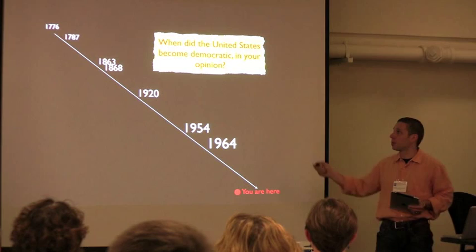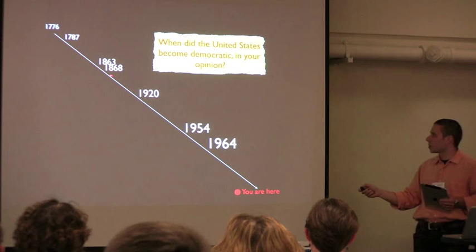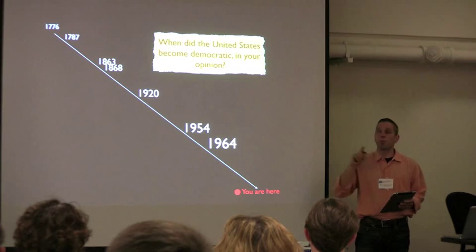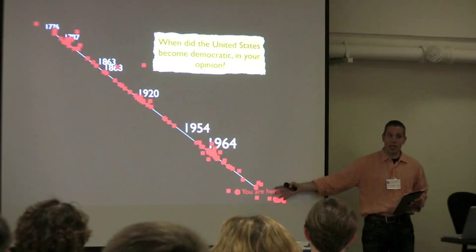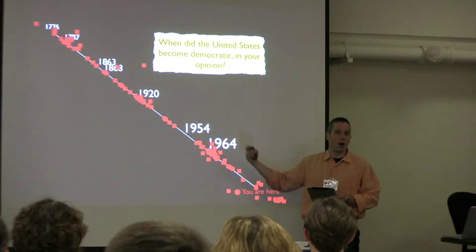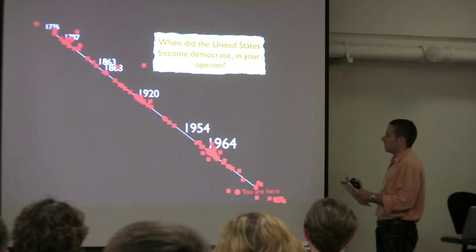Lecture Tools has what I'd call a smart clicker. Here's an example: I create a timeline of important dates in US history — Independence, Constitution, Civil War, Gettysburg Address, Civil War Amendments, the 20th Amendment, Brown v. Board, the Civil Rights Act — and I ask students when the United States became democratic. On their computer they place their mouse on the timeline. What's interesting is that many students think the US hasn't become democratic yet. The real power is that it's not testing understanding — it's generating conversation. We see a wide variety of opinions on what democracy means, and it does that in a pretty powerful way.